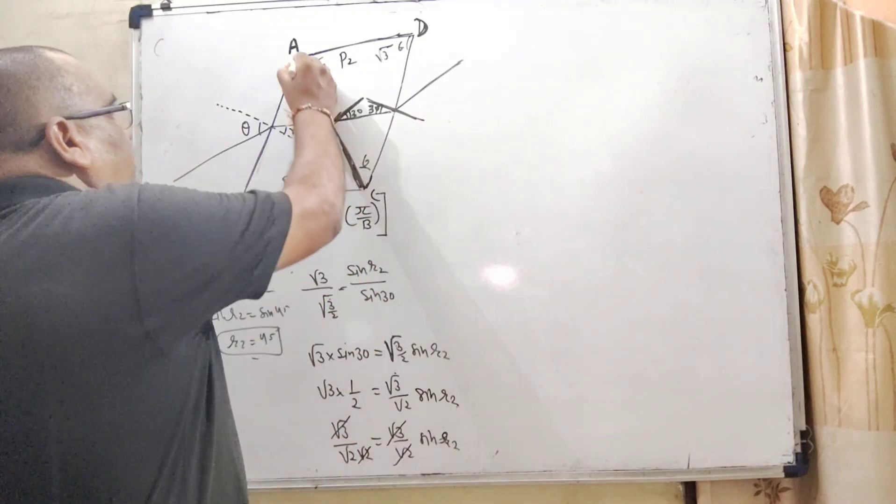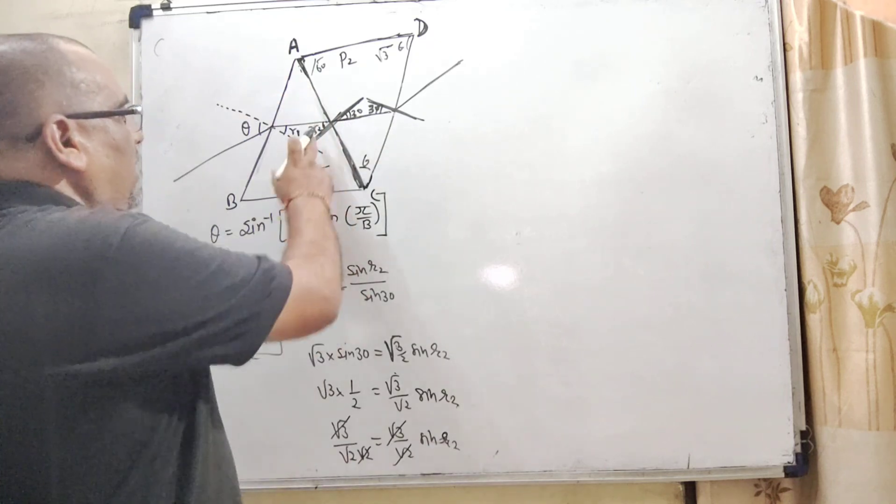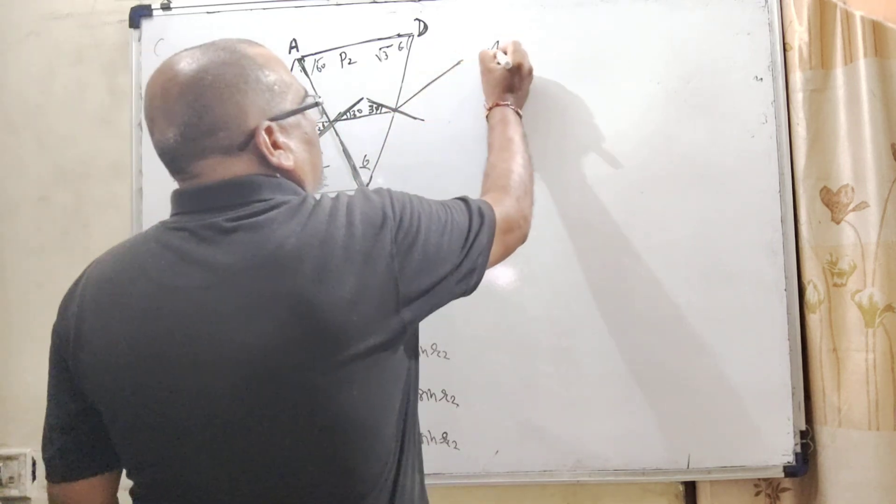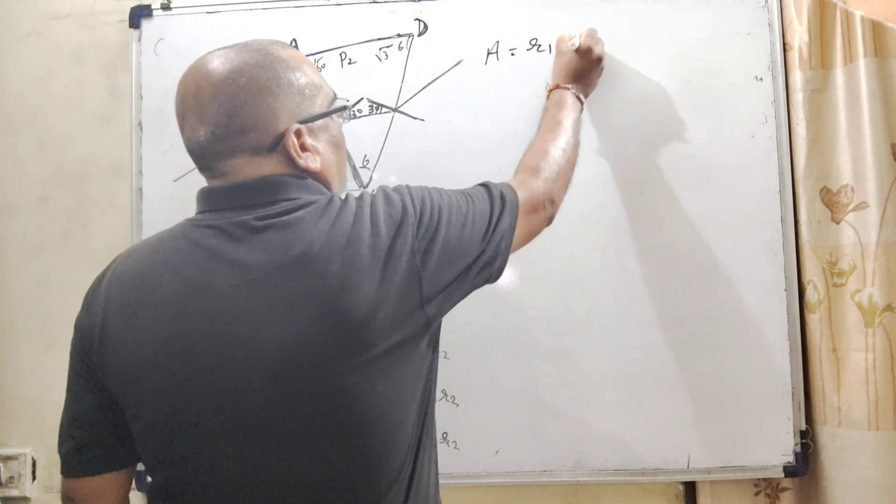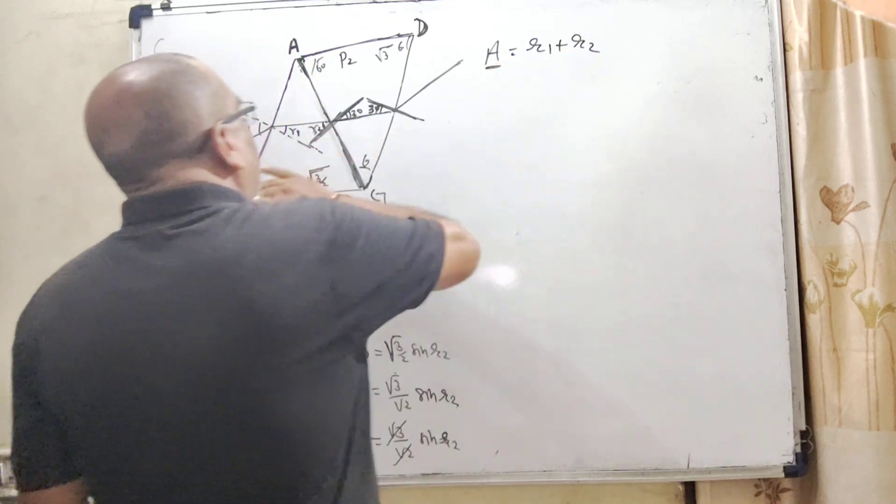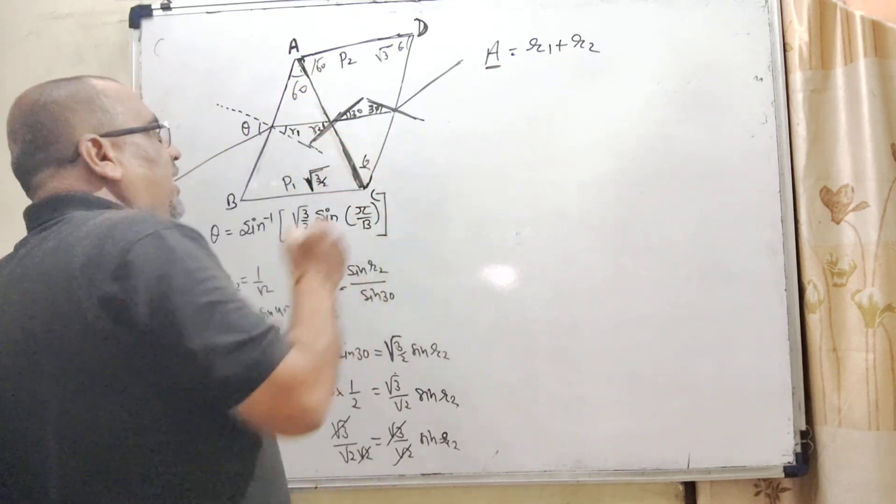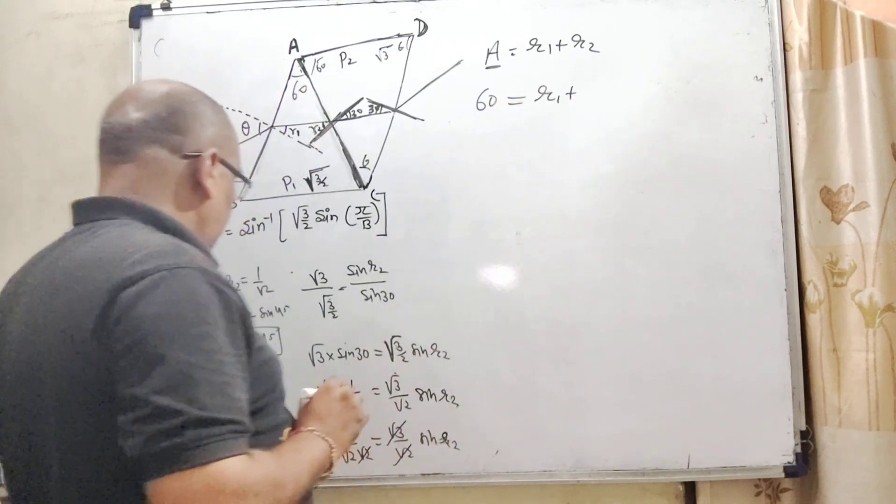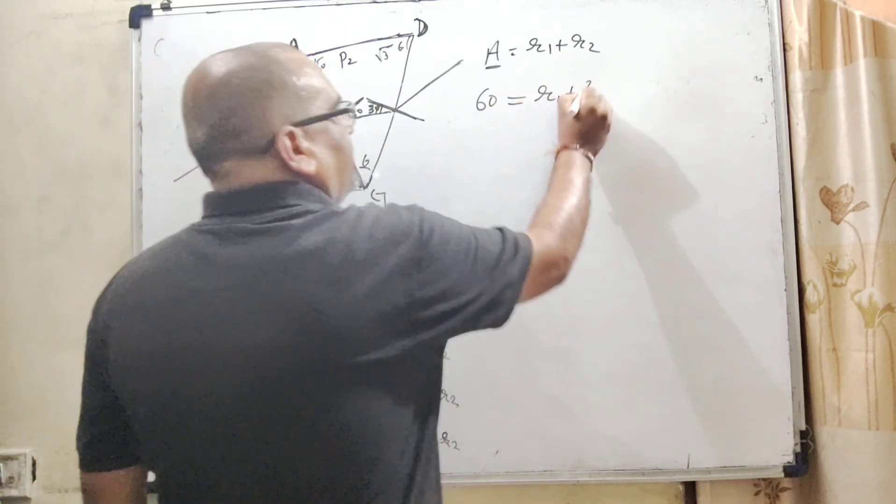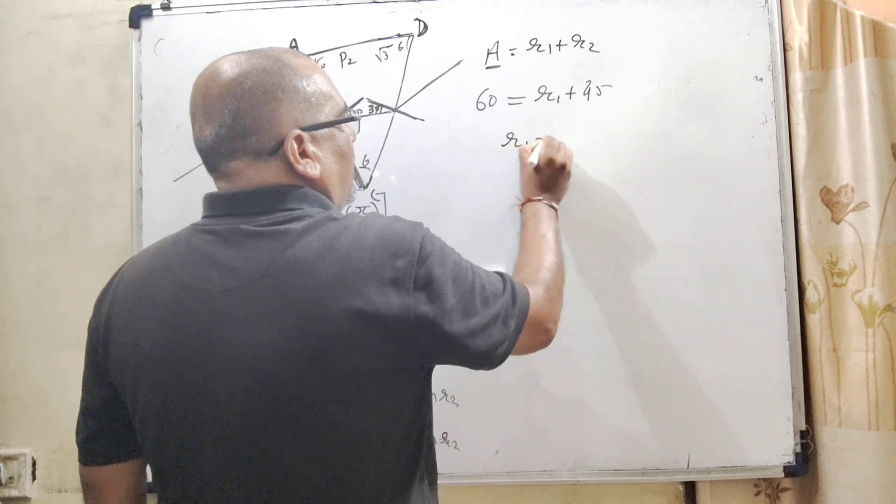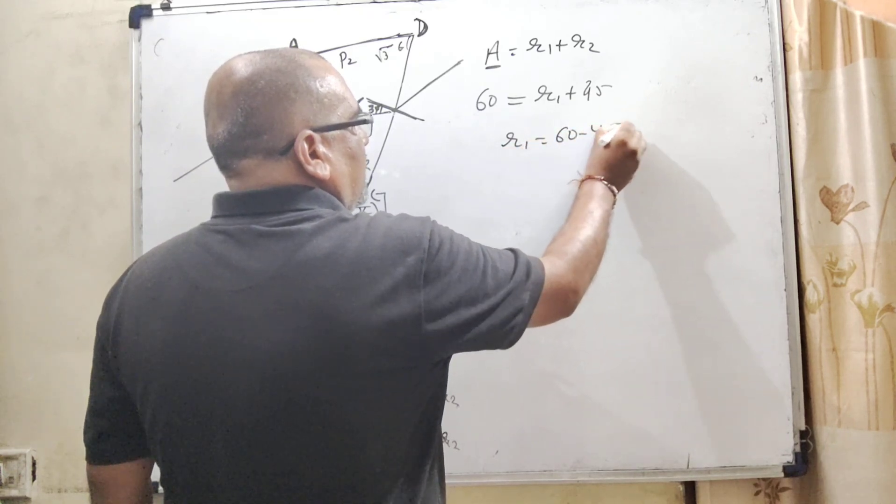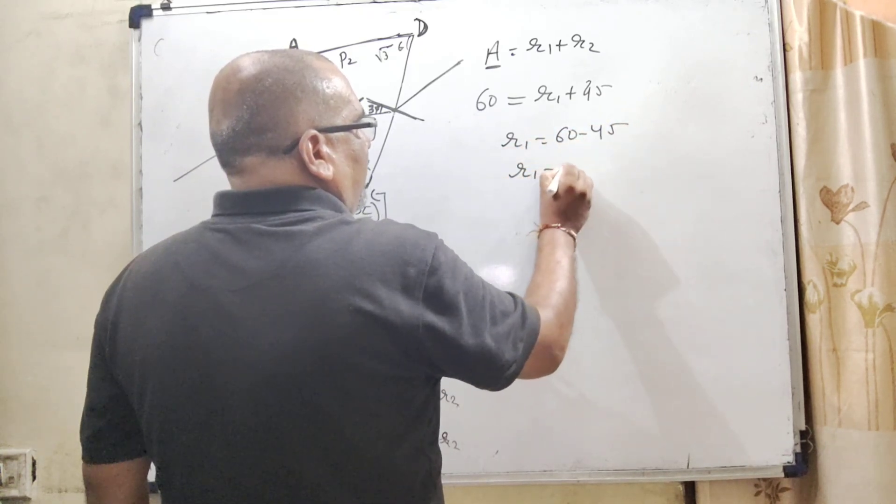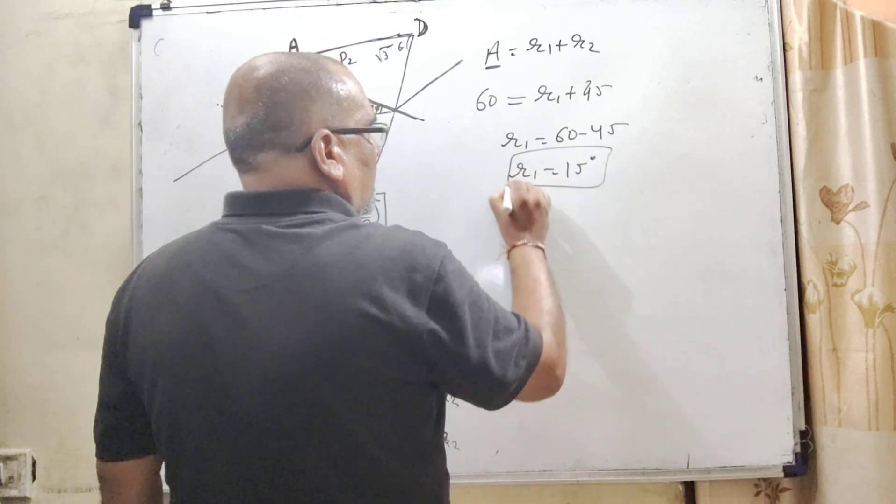Now we come to the prism P1. Again, as we know that A equal to R1 plus R2. Here A, again this is equilateral triangle, so this is 60 equal to R1. Here R2 is 45. So here R1 equal to 60 minus 45, that is 15 degrees. So R1 equal to 15 degrees.